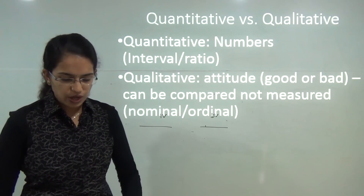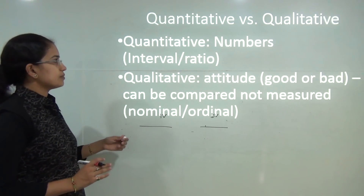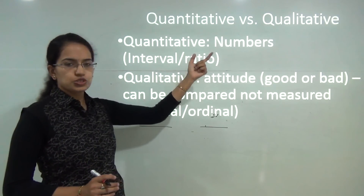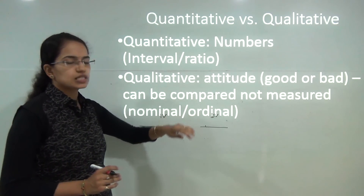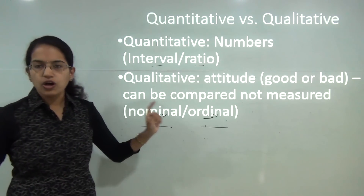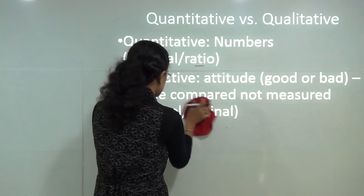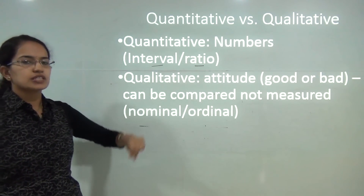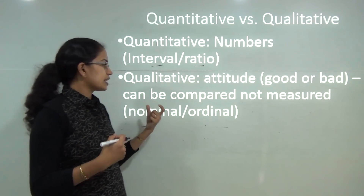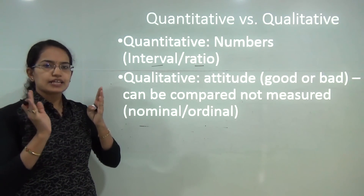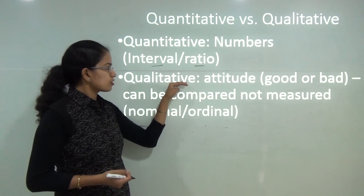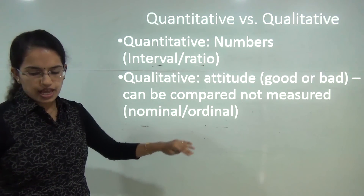Coming to quantitative and qualitative variables: quantitative variables are those which can be measured in numeric terms — you have interval and ratio scales. Qualitative variables talk about attributes such as good or bad, pass or fail, employed or unemployed, skilled and unskilled — these can be compared but cannot be measured in absolute numbers. Under qualitative we have nominal variables and ordinal variables.